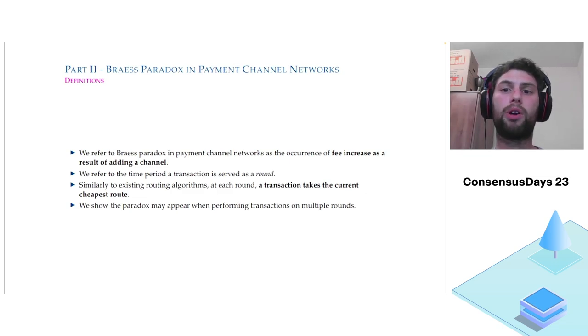We refer to Braess's Paradox in payment channel networks as the occurrence of a fee increase as a result of adding a new channel. If we have some network and we add a new channel, if the Paradox appears, the fee increases as a result of adding this channel. We define the round as some period of time where a transaction is performed or executed, and we show the Paradox may appear during multiple rounds. At each round, we assume the user chooses the cheapest path available.